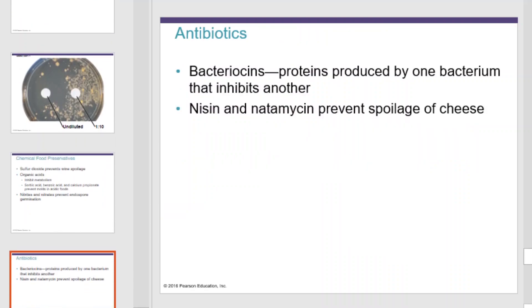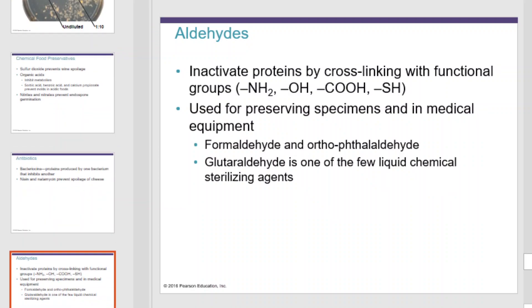Antibiotics, as their name implies, kill microorganisms. They are bacteriocidal — proteins produced by one bacteria that inhibit another. Nisin and natamycin prevent the spoilage of cheese. Aldehydes inactivate proteins by cross-linking with functional groups in the amine, hydroxyl, carboxyl, and sulfhydryl groups. They are used to preserve specimens and medical equipment — formaldehyde is an excellent example.